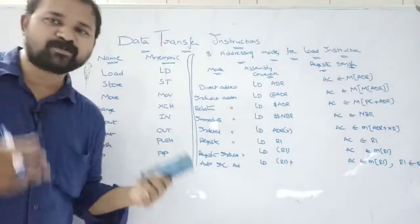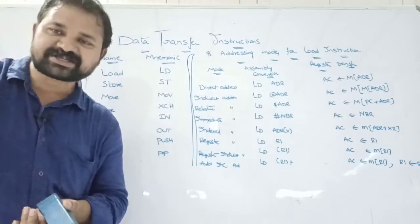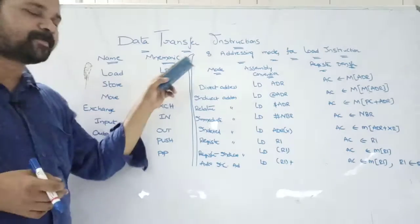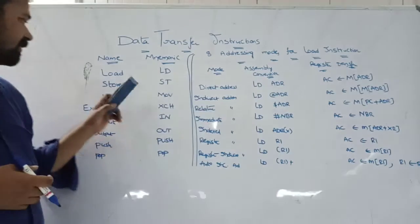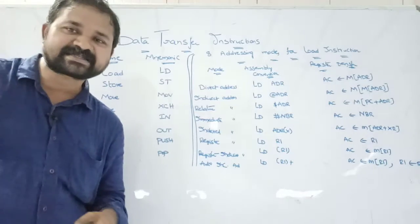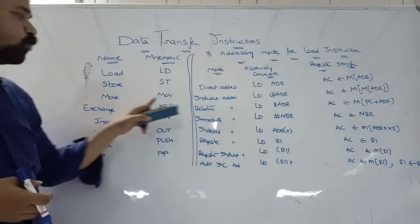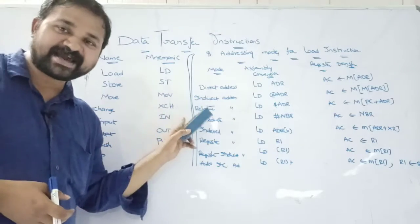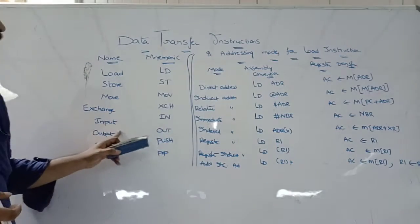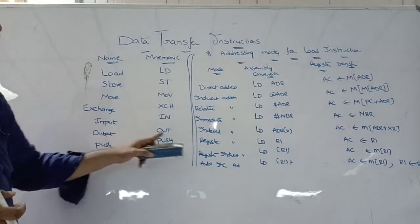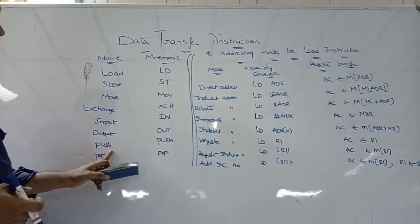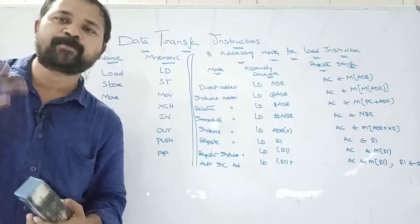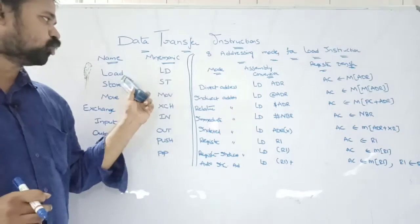Let's see the different types of data transfer instructions. The first column represents the name and the second column represents the mnemonic — mnemonic means the symbol used to represent that instruction. The instructions are: Load (LD), Store (ST), Move (MOV), Exchange (XCH), Input (IN), Output (OUT), Push (PUSH), and Pop (POP).